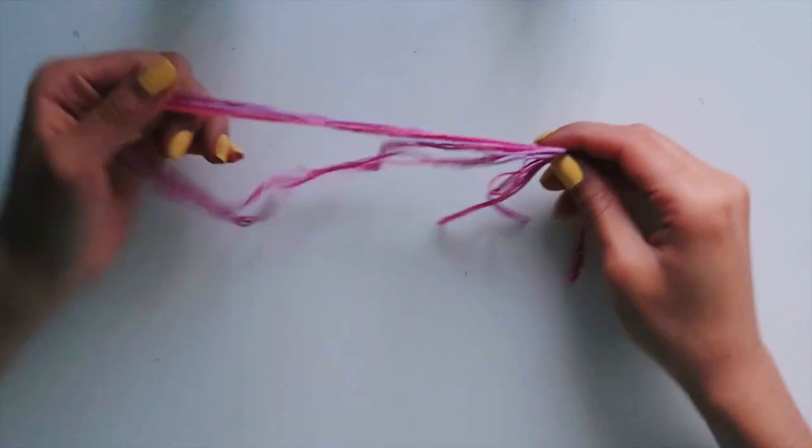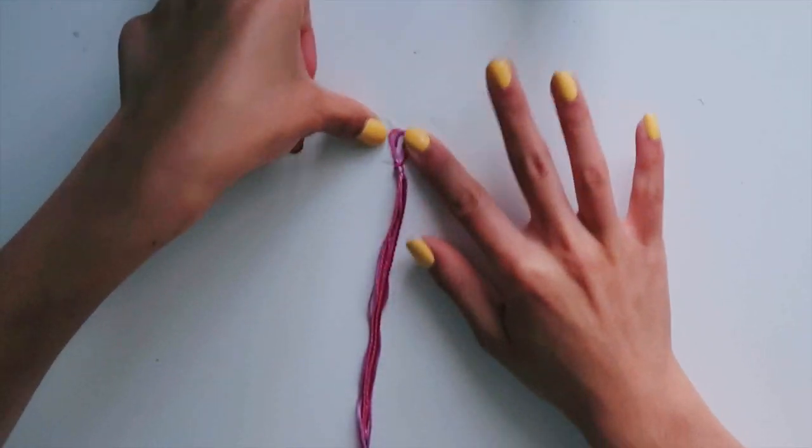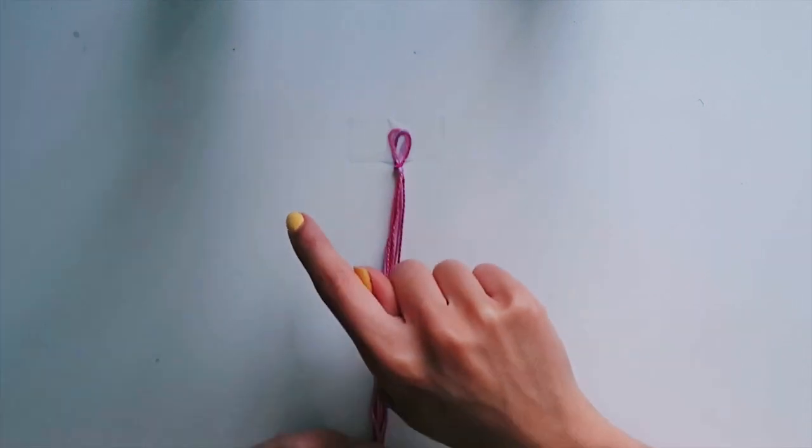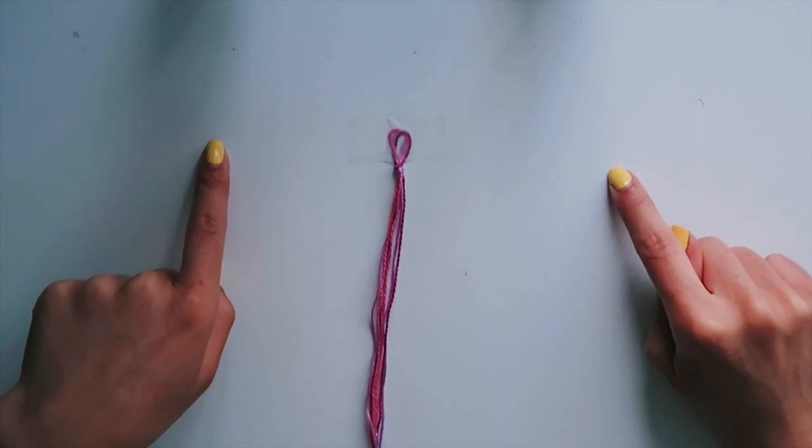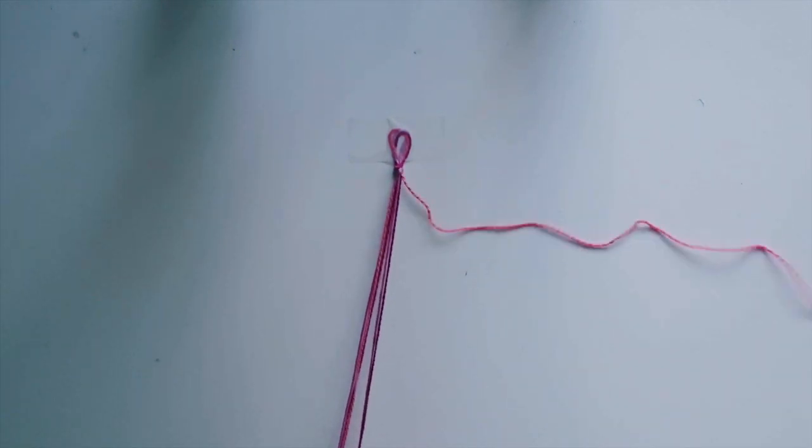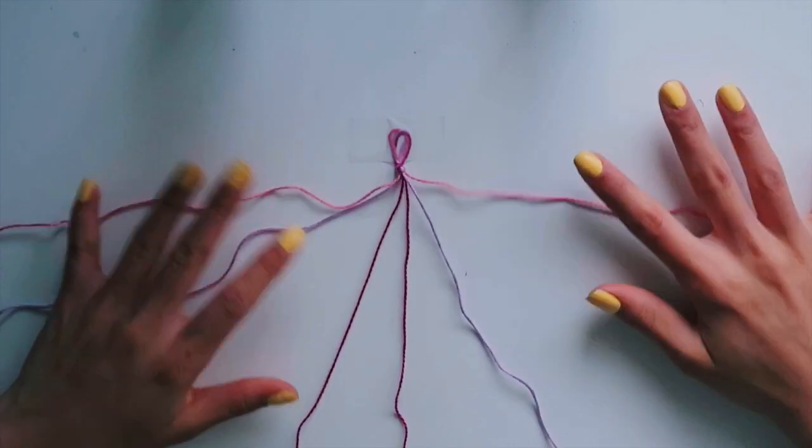Now for the most difficult of these basic designs, I'm gonna be showing you guys how to do a chevron. The difference starting here is when I separate my strands, instead of making it color one, two, three, one, two, three, it's gonna be color one here, one here, two here, two here, and then three here, three here. I'm gonna put pink on the outside, and then purple second, then magenta is in the center.